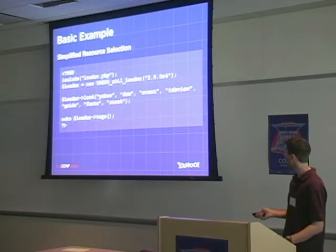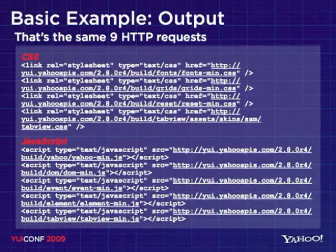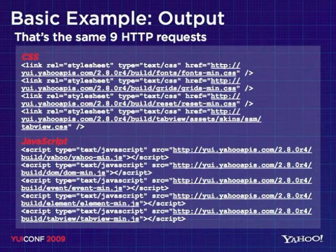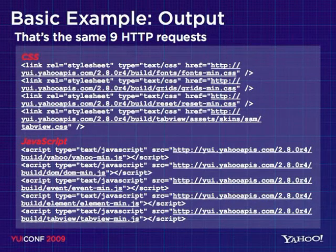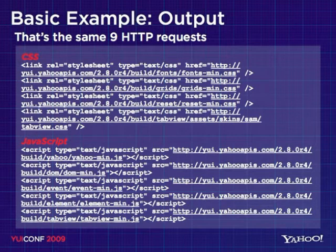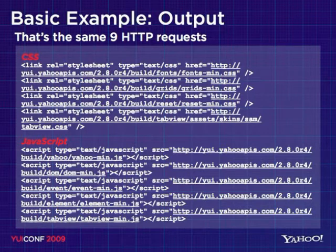What does that actually look like? It's the same thing we saw before — so instead of handpicking all the components, we've just specified the ones we need and get the same output. Those are CSS resources, and then there are our JavaScript resources. By default, that's nine HTTP requests.